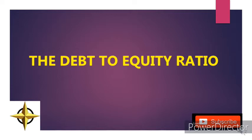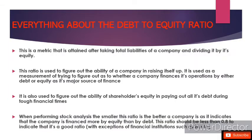With that said, let's get down to business. The debt-to-equity ratio is a metric attained by taking the total liabilities of a company and dividing it by its equity. When performing analysis on a company, head to the annual report of that particular year, go to its statement of financial position or balance sheet, then take its total liabilities and divide by the total capital to get the debt-to-equity ratio.